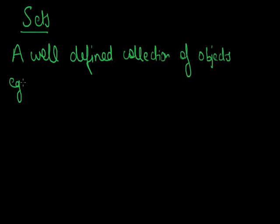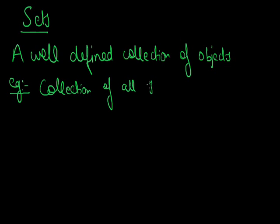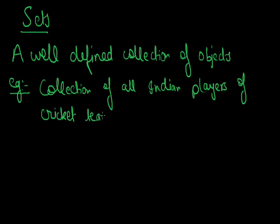For example, if we say the collection of all Indian players of a cricket team at present, then it is a well-defined collection of objects because we can define what all Indian players are there in the cricket team. So we can define this part, and therefore the collection of all Indian players playing at present is a well-defined collection of objects.